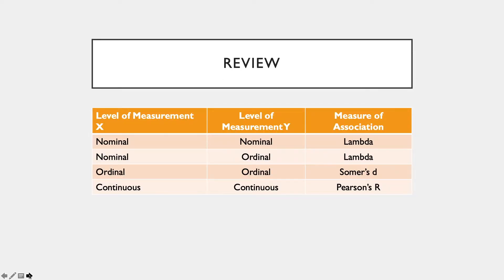Before we begin the demo, let's briefly review. If the level of measurement of your independent variable is nominal and your dependent variable is also nominal, the appropriate measure of association is Lambda. If the independent variable is nominal and the dependent variable is ordinal, you can also use Lambda. If both the independent and dependent variables are ordinal, Sommers D is an appropriate statistic. If both variables are continuous, Pearson's R is appropriate.